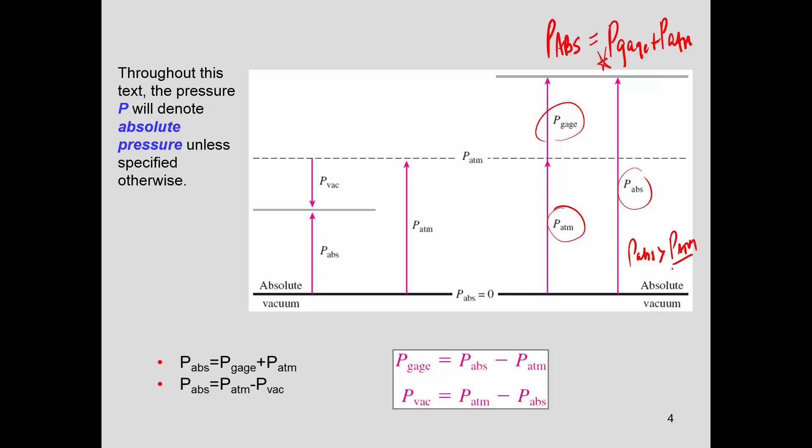Now, in the case of a vacuum pressure, what happens is that it's less than atmospheric pressure. So here is your atmospheric pressure, and now the vacuum pressure is going to be less.